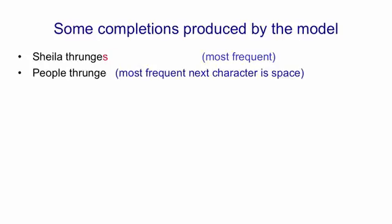If you give it people thrunge, the most frequent next character is a space, not an S, which suggests that it knows that people is plural.